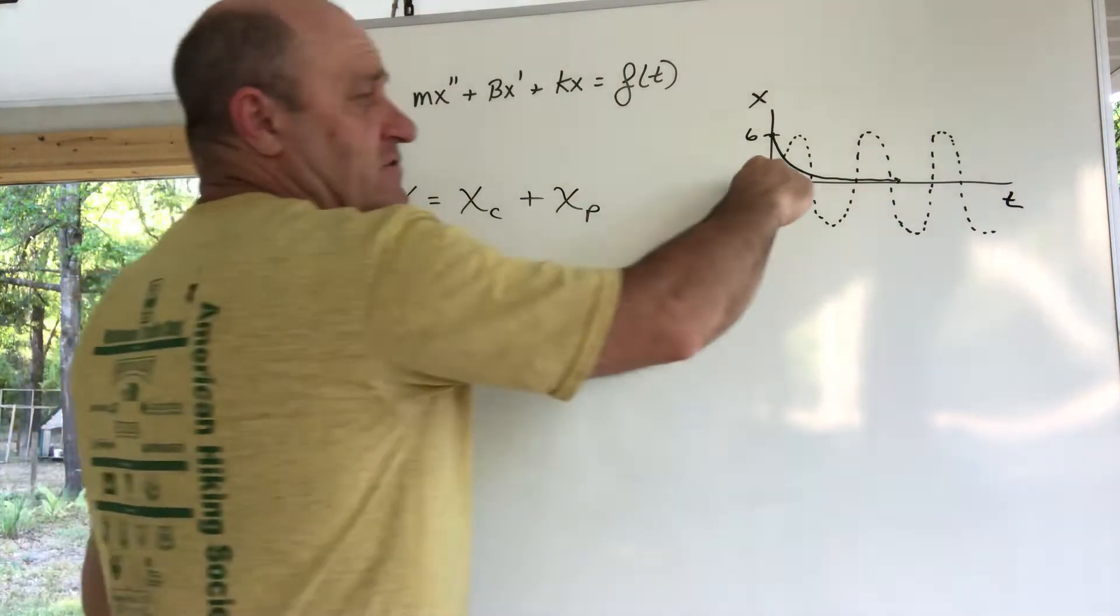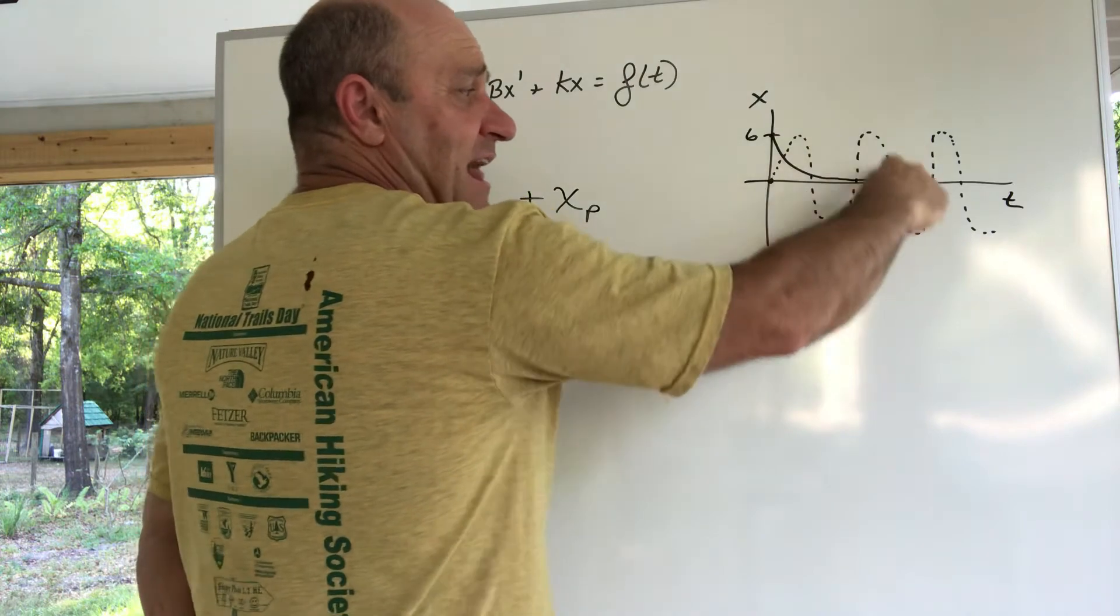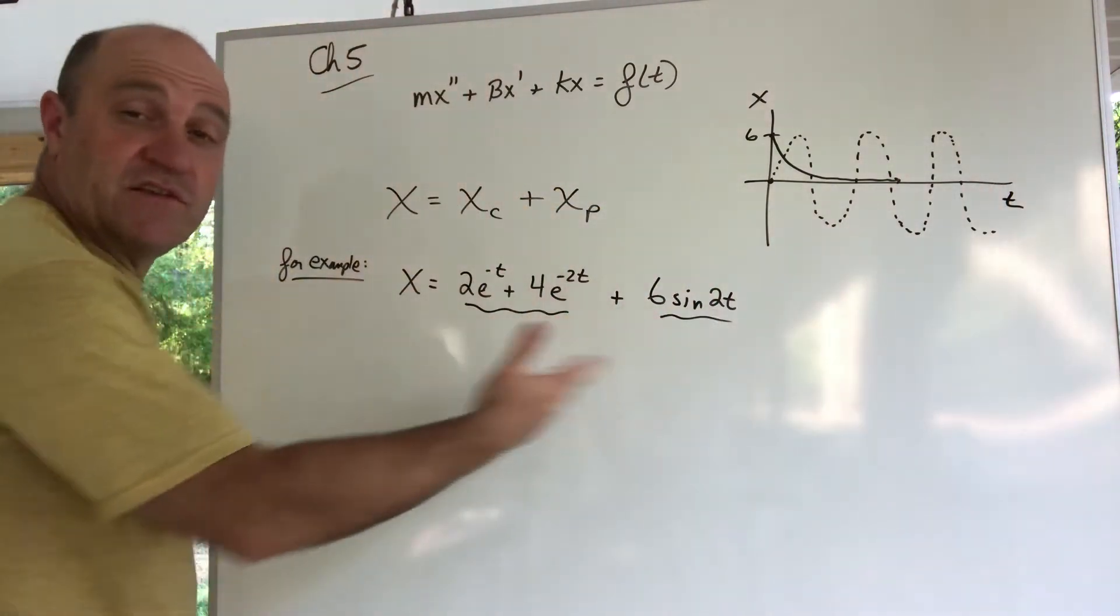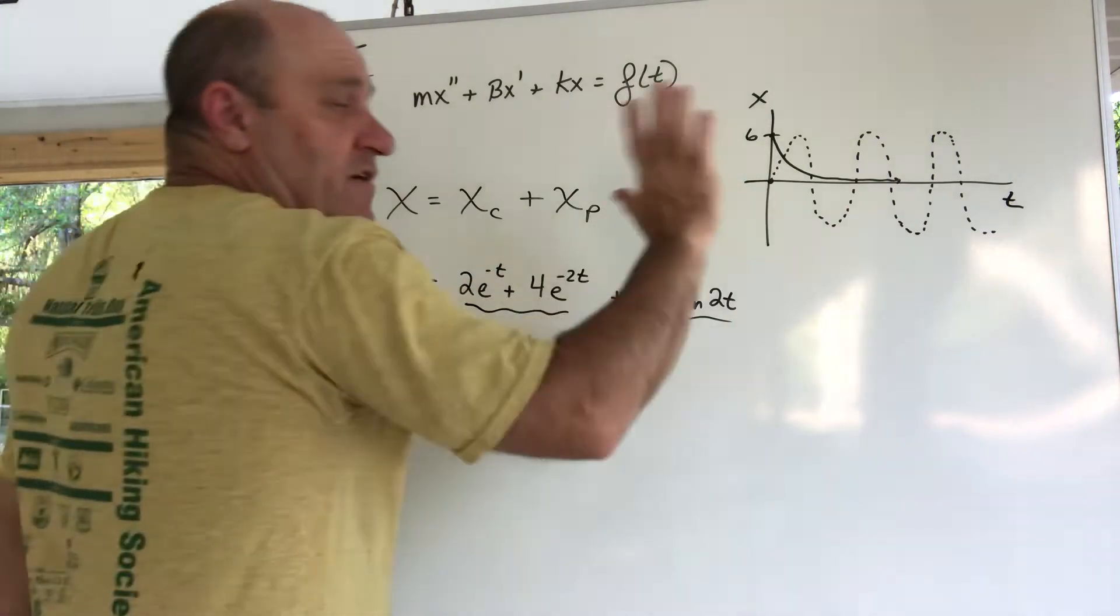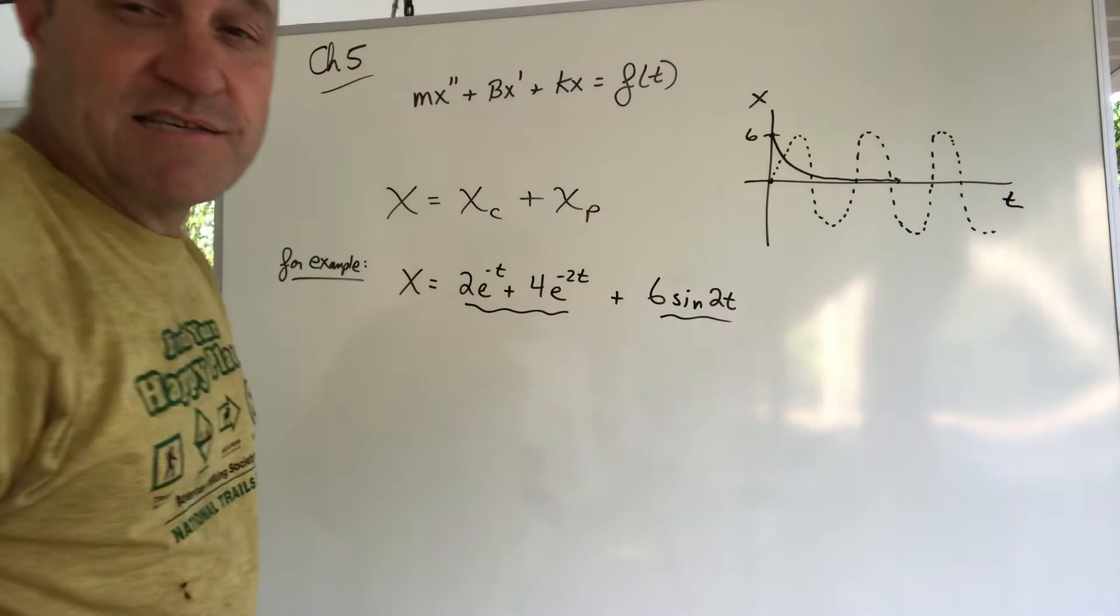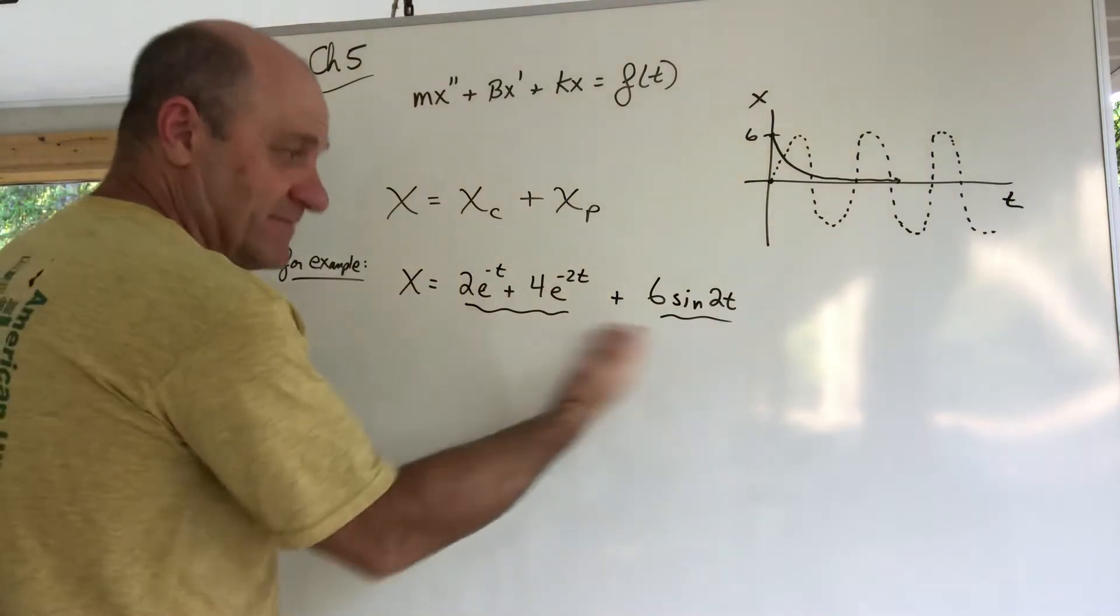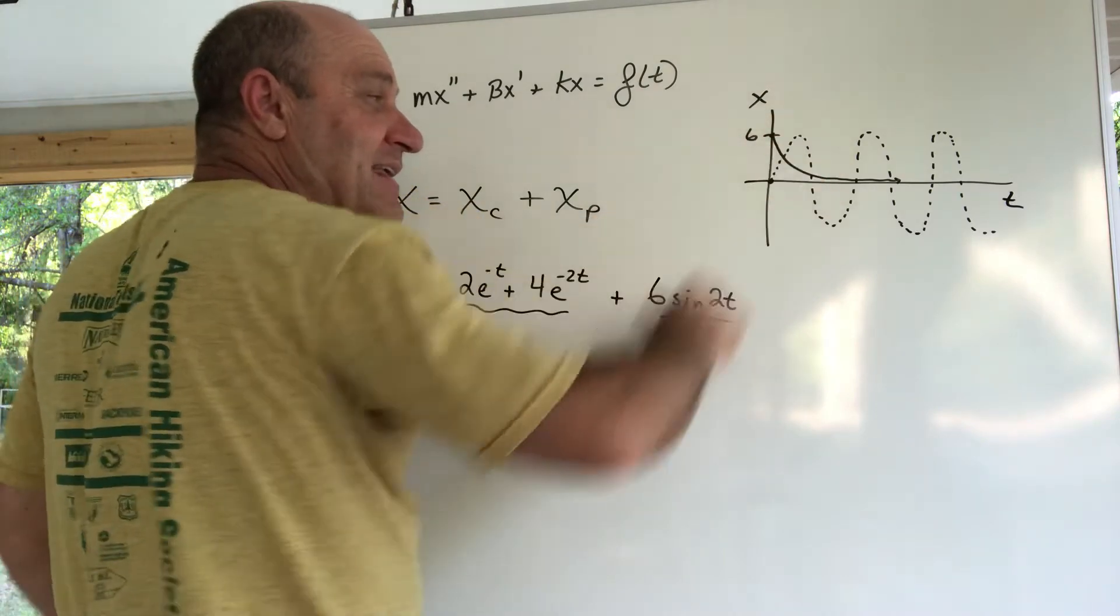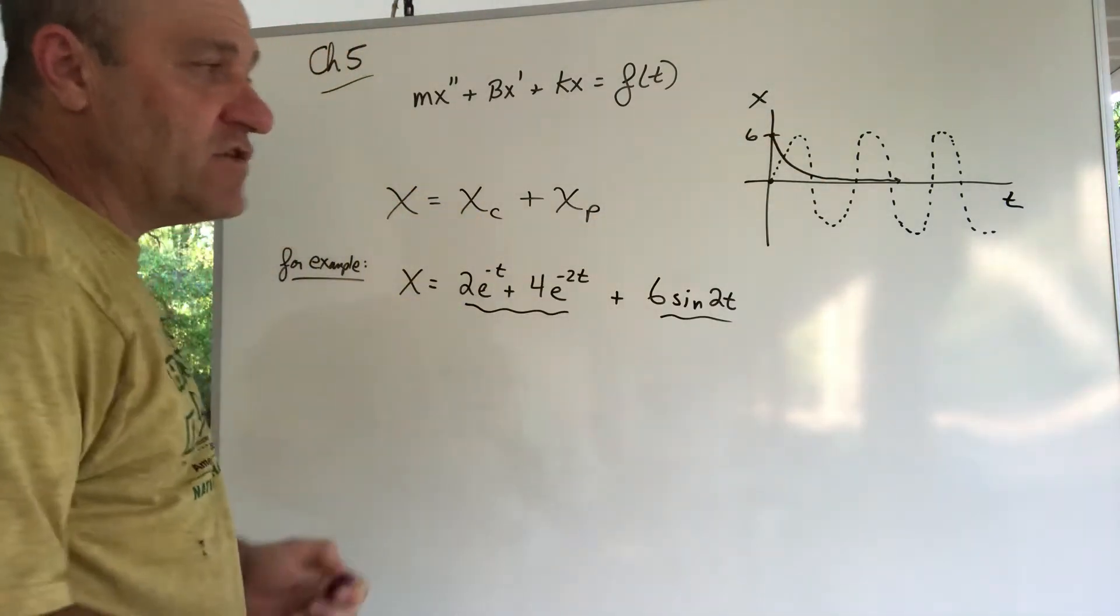If I just graph the xp, it's a sine function with an amplitude of six, so there it is in the dotted line. But the solution x is the sum of these two functions. You are actually summing the y values here, you're adding these functions together, of course, but graphically you're adding these together, so you're adding these y values and they interfere with each other.